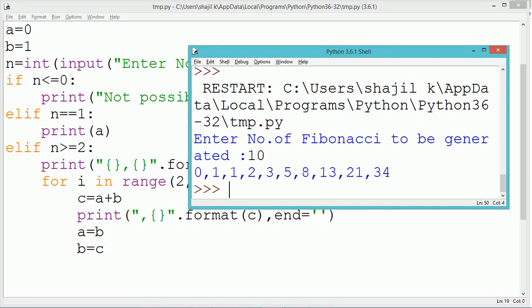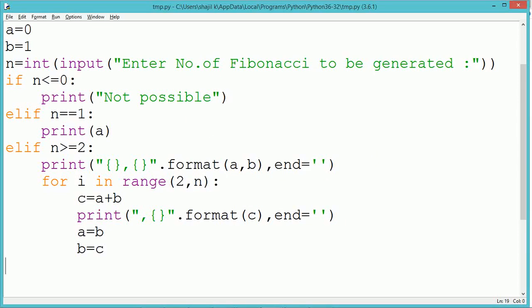Once the value of c gets printed, the value of a and b will take the new leftmost Fibonacci numbers which are generated.